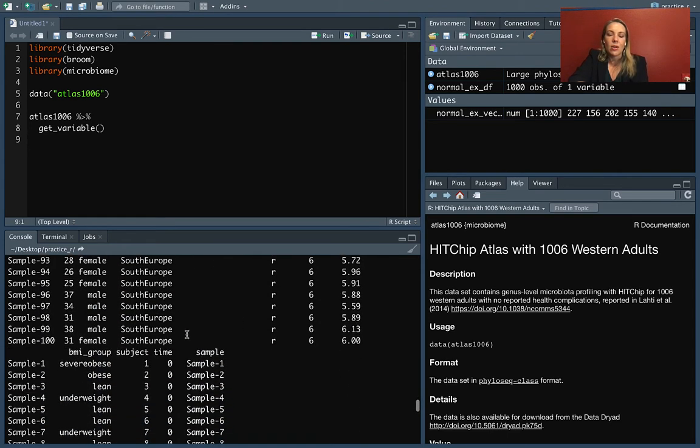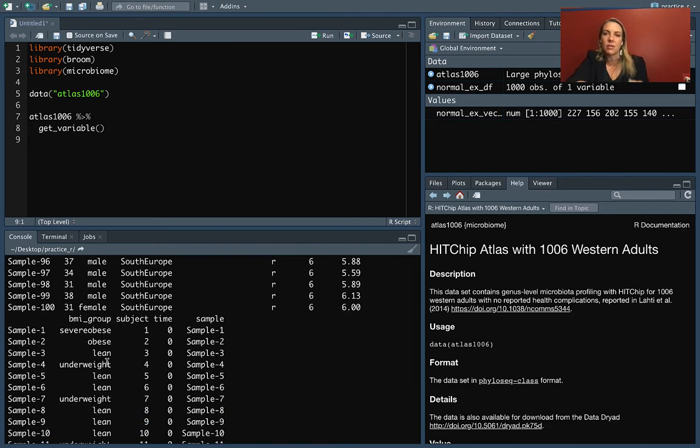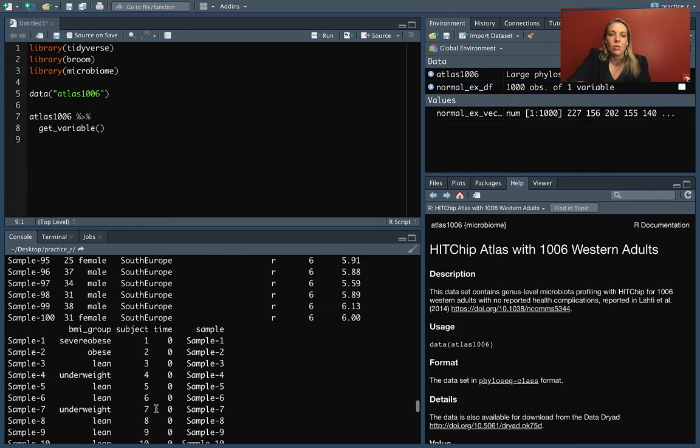We're getting a data frame where we've got information about these different samples that were run. We've got information not about the microbiome measurements necessarily, but things really about the subject. So we've got age, sex, nationality, this diversity measurement, and some other information like the BMI group, whether they were underweight, lean, severely obese, and the times, so some of these subjects were measured at different time points.